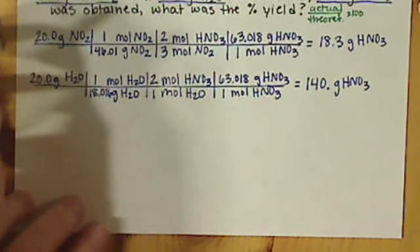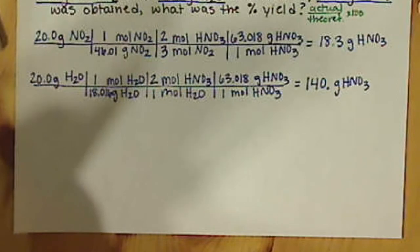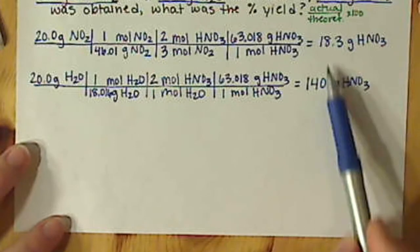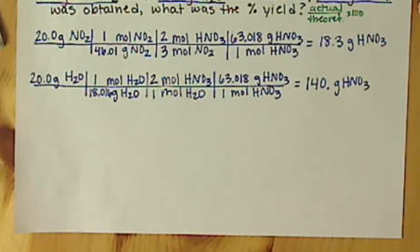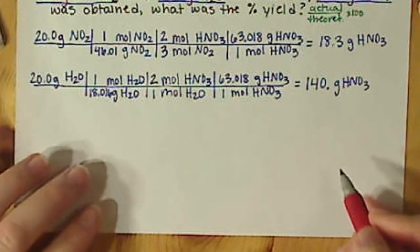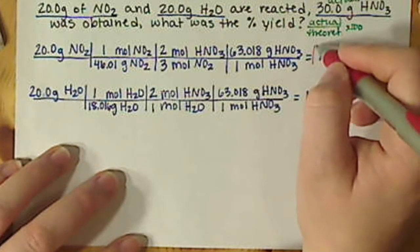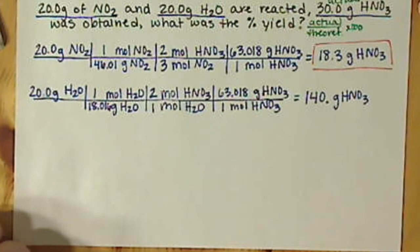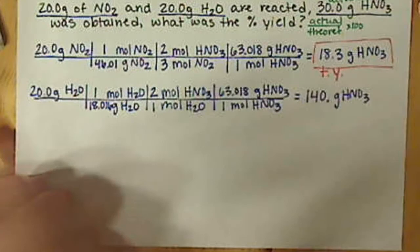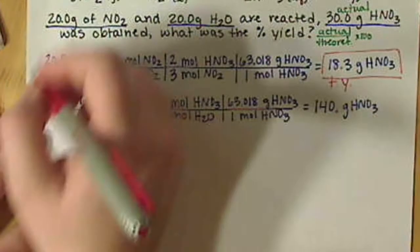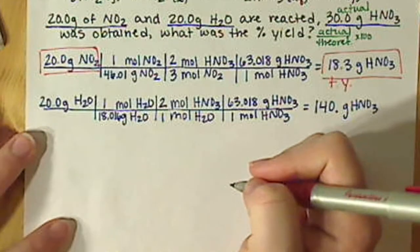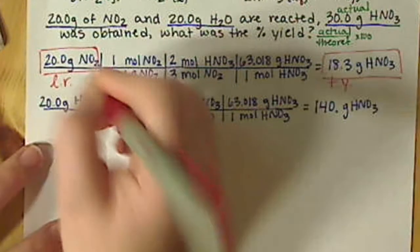That seems a little high, so I'm just going to verify. So I have 20 divided by 18.016 times 2 times 63.018. So definitely a big difference here. I'm definitely going to run out of something first. So what is our maximum amount of product that we can form? That is our 18.3 grams of nitric acid. So that is our theoretical yield. Which makes, when we started out here, our 20 grams of nitrogen dioxide. That is our limiting reactant.